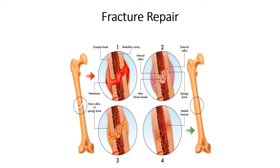Phase 1 — Hematoma Formation: جب bone break ہوتی ہے تو اس کے اندر جو blood vessels ہوتی ہیں جو bone کو blood supply کر رہی ہوتی ہیں وہ بھی break ہو جاتی ہیں اور اس کے نتیجے میں hemorrhage ہو جاتا ہے۔ Blood vessels جو rupture ہوتی ہیں ان سے blood escape ہو کر tissues میں جمع ہونا شروع ہو جاتا ہے اور وہاں پر ایک blood clot بن جاتا ہے۔